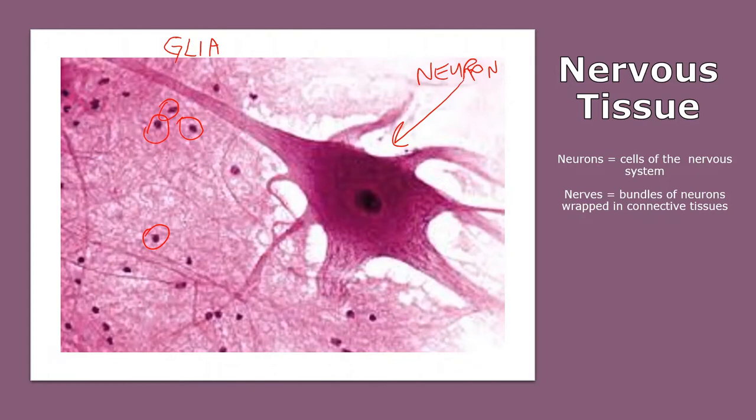Nerves are different than neurons. I want to be clear here. Neurons are the cells, like I see here in this picture. That's not a nerve, though. A nerve is a bundle of neurons that's wrapped in connective tissues. Neuroglia are the little support cells, the network cells that surround the main neurons.